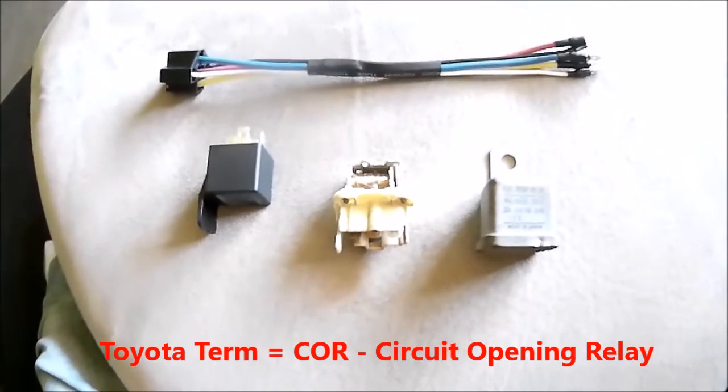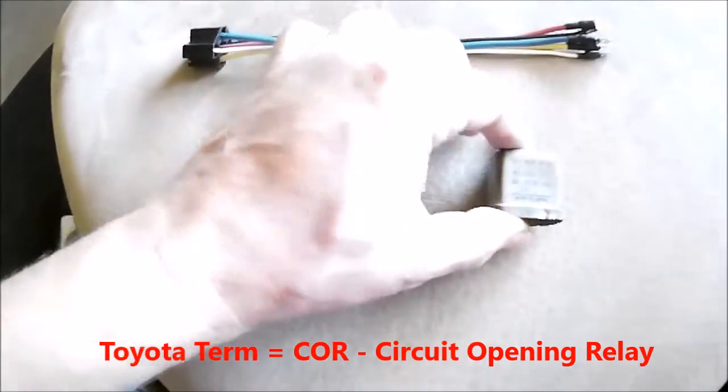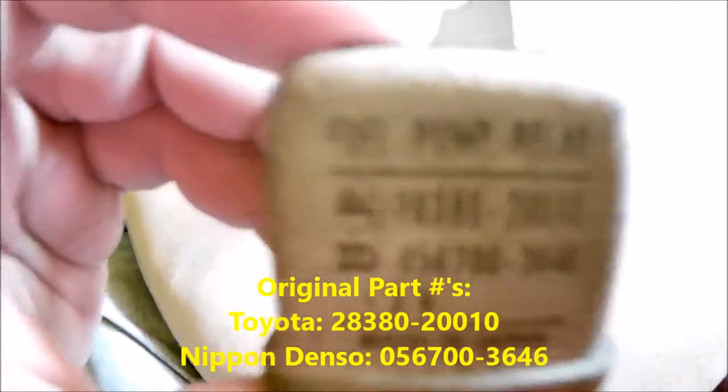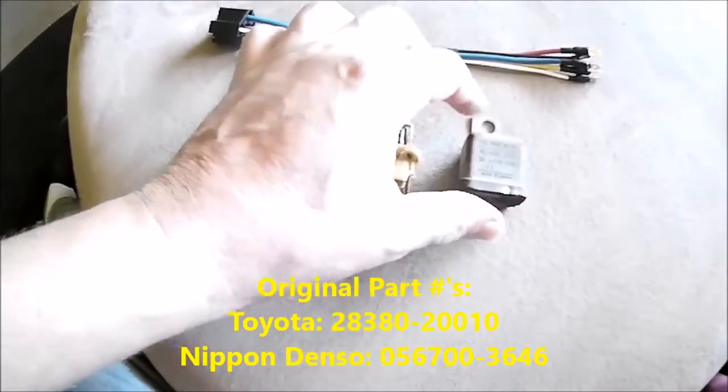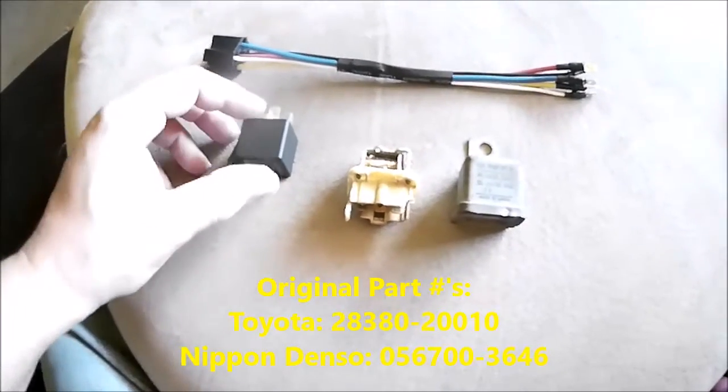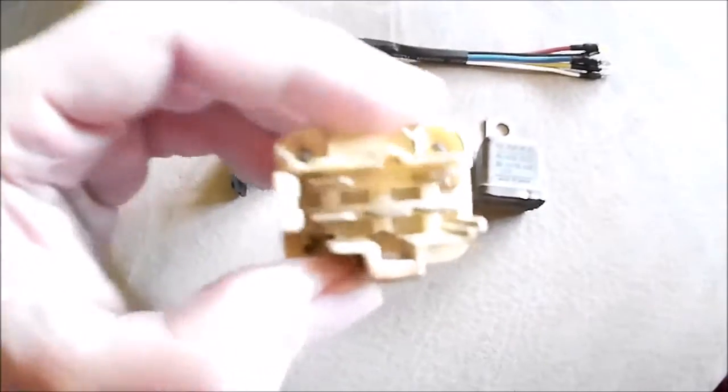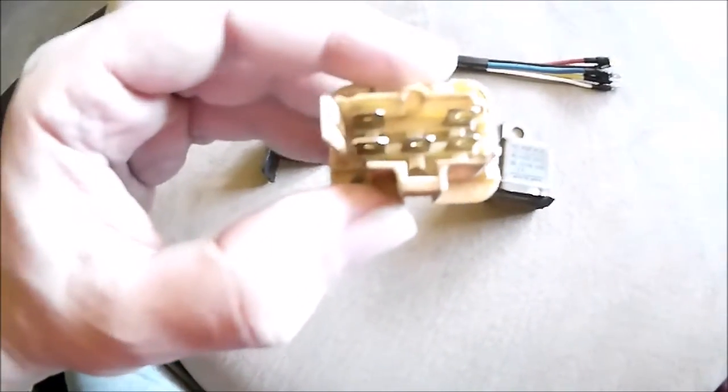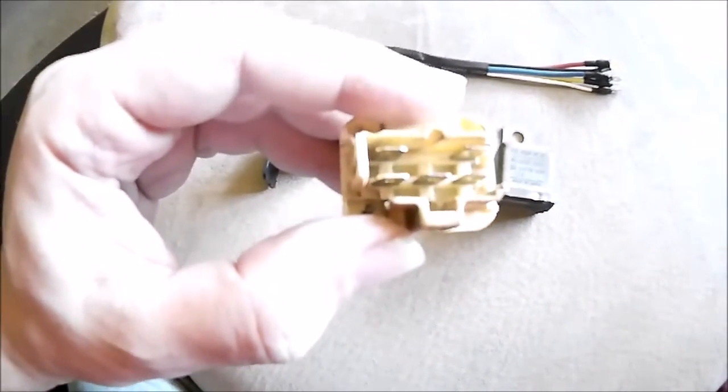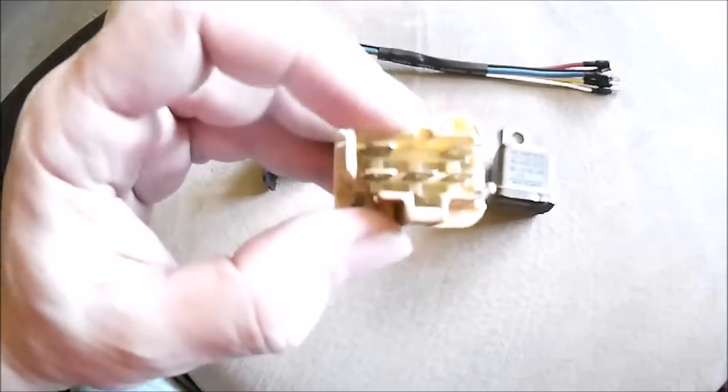As you can see, it says fuel pump relay right on it with a part number. You can get replacements for these trucks. It's a typical five-pin relay, but the Nippon Denso part is exclusive to Toyota - rectangular plug, five pins.